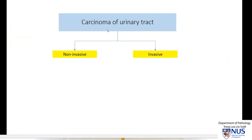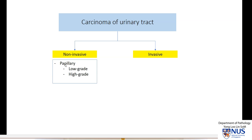Looking at urothelial carcinomas, there are two main types: non-invasive and invasive. Non-invasive usually have a papillary, frond-like architecture like what we are seeing here, and they can be low-grade or high-grade. You can also have a flat carcinoma in situ, where there is just a flat layer of malignant cells that have not invaded into the lamina propria.